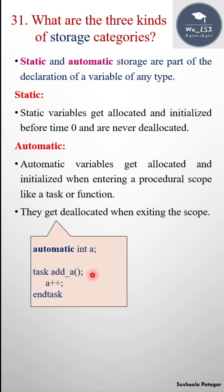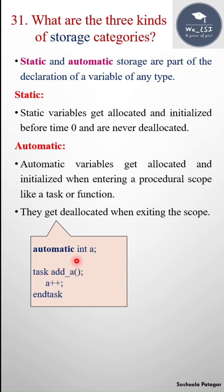Here I have a small task add_a. Inside add_a I'm incrementing the value of a. So when I call add_a, a value gets incremented to 1. For the second call, a value will again be 1, and for the third call a value will be 1. Why is a always 1? Because it's automatic — for each call, a will get new memory. So when a++ is executed it comes out of scope, gets deallocated, and for each call it gets new memory, so a value will be 1.